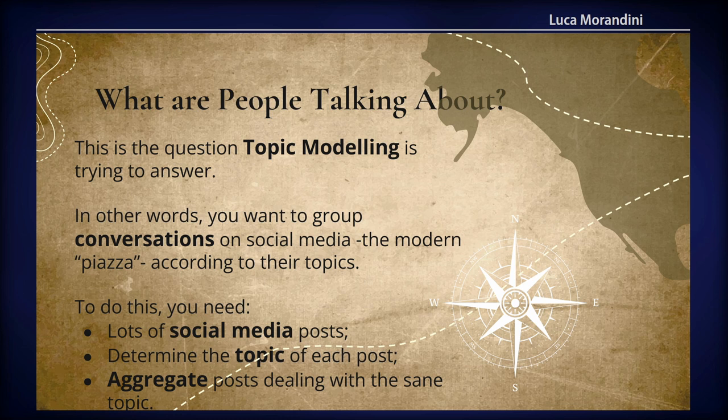Topic modeling is a natural language processing technique in which algorithms are used to determine what a text is about — its topic, or a mixture of topics in the case of longer documents. We apply this to social media posts, which are very short.